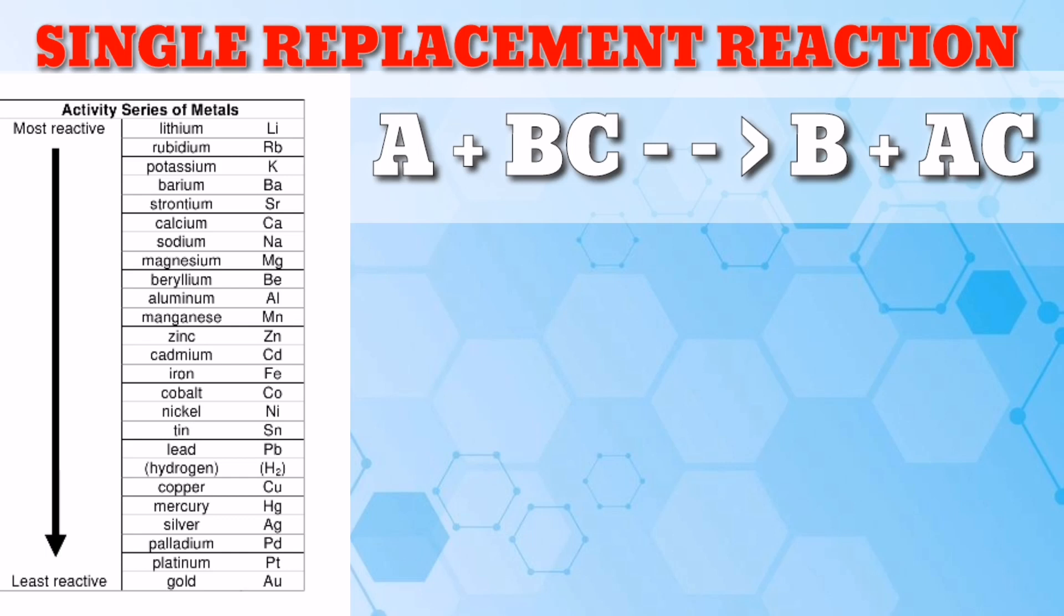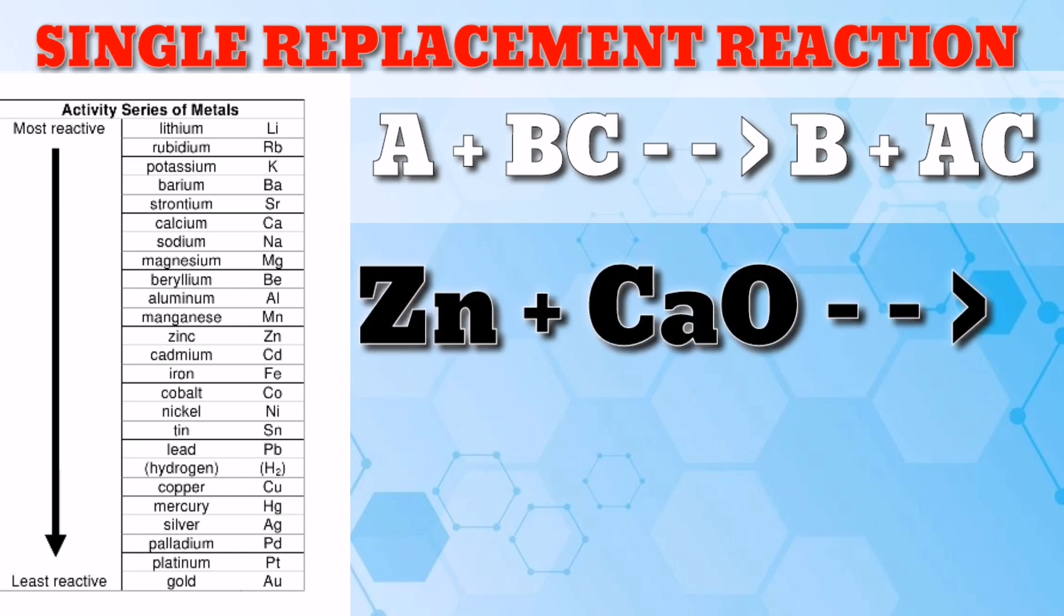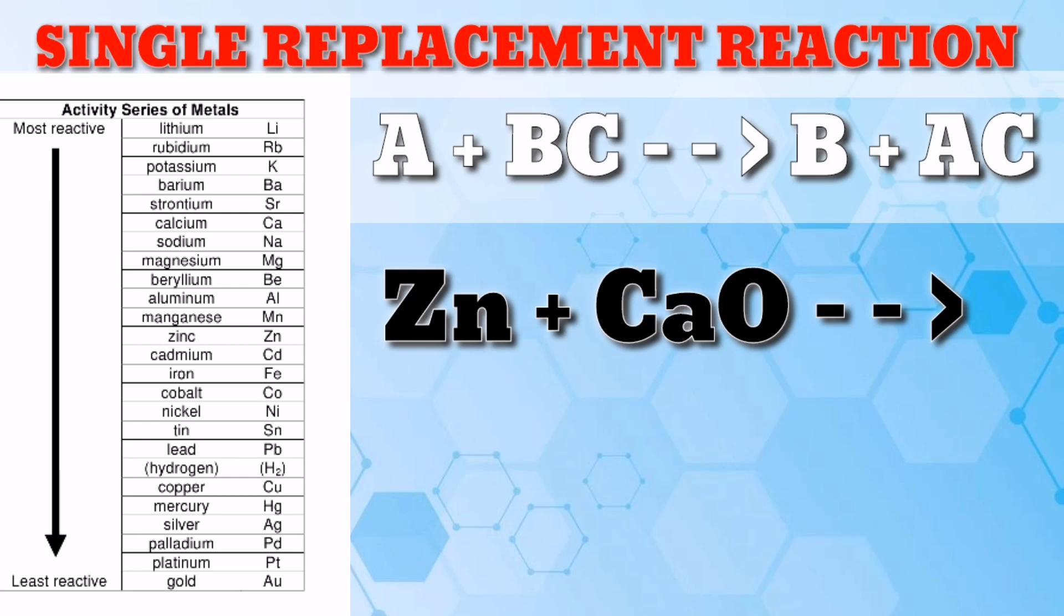Let's have the next example. We have zinc reacted with calcium oxide. What are the products? Again, look at the activity series. Is zinc more reactive than calcium? The answer is no, because zinc is listed below calcium. Hence, there is no reaction. Just write NR.